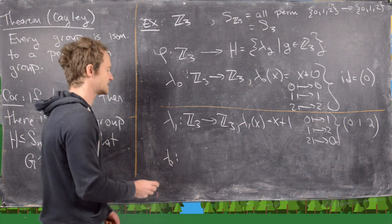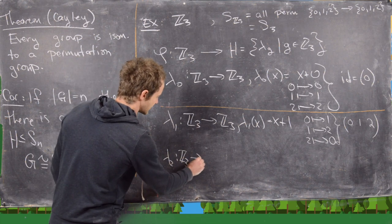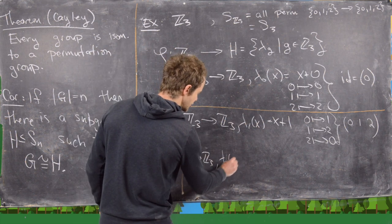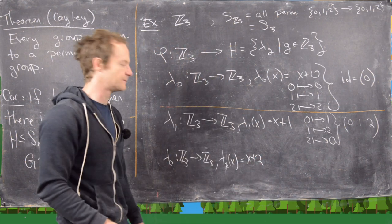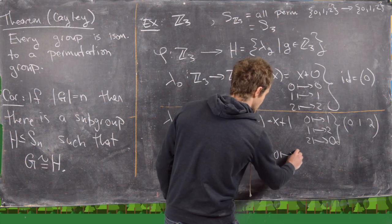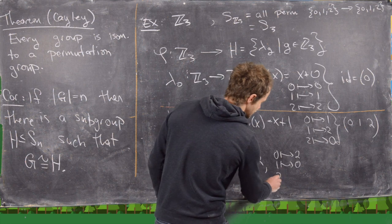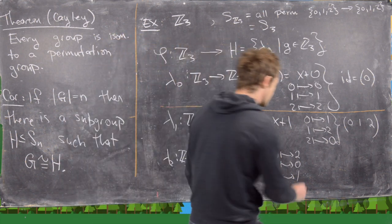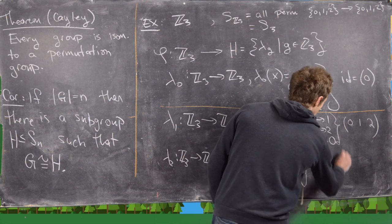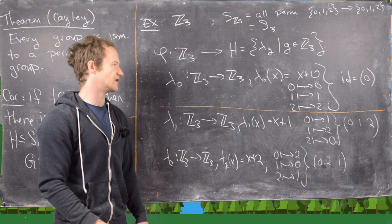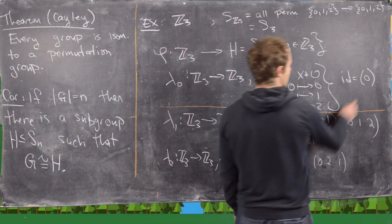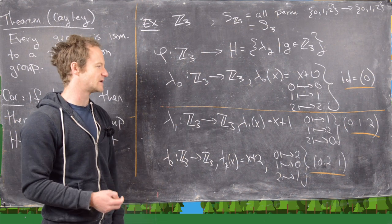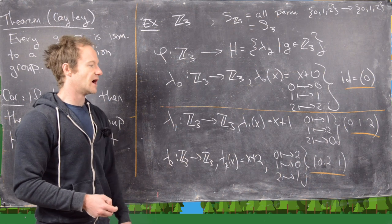Now let's look at λ₂, the last one. λ₂ takes Z₃ to Z₃, and λ₂(x) equals x plus 2. That gives the permutation where 0 goes to 2, 1 goes to 0, and 2 goes to 2 plus 2 which is 4, which is 1 mod 3. So that is the permutation (0 2 1) in cycle notation. Notice we have three elements which are permutations in S₃ — we've just renamed using 0, 1, 2 instead of 1, 2, 3, but that's okay.